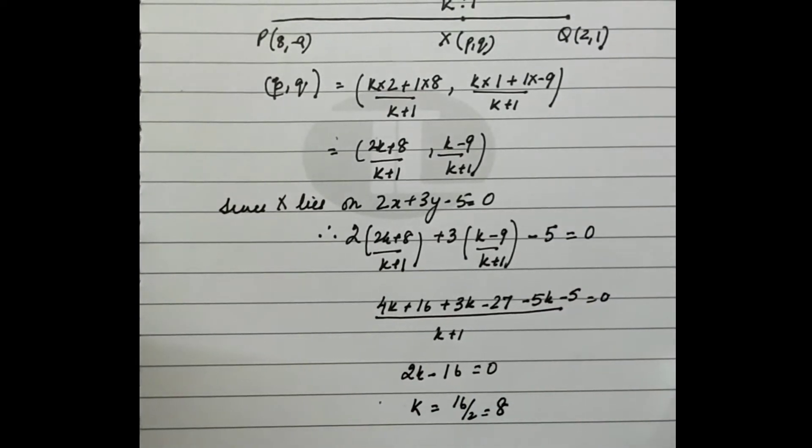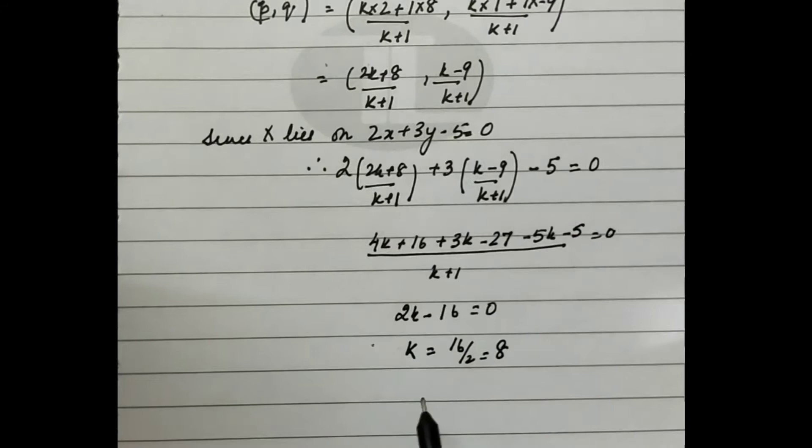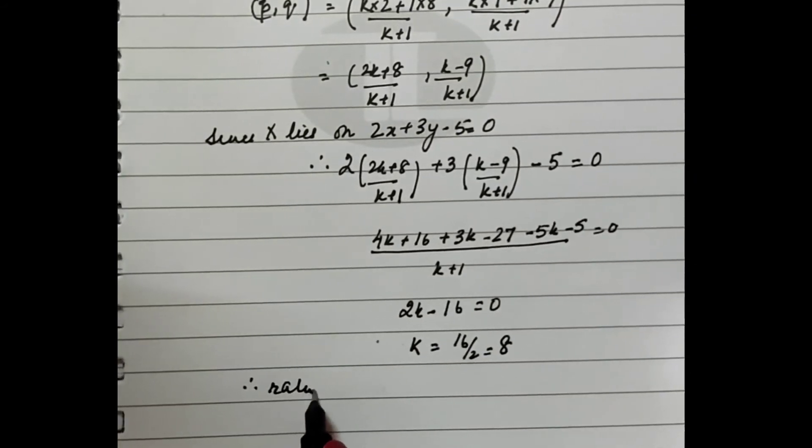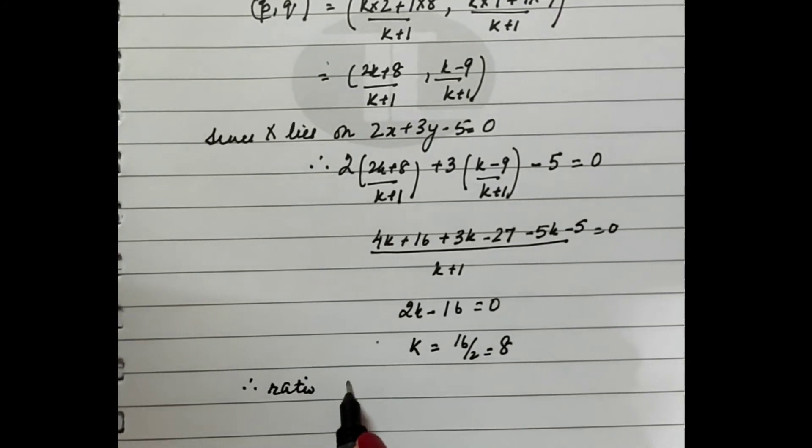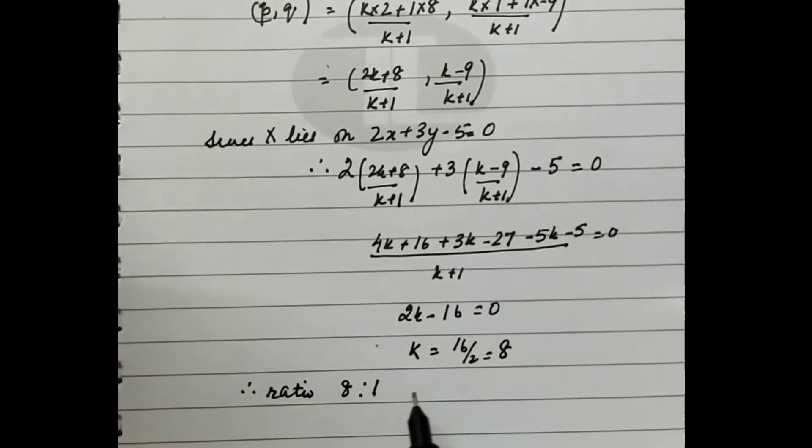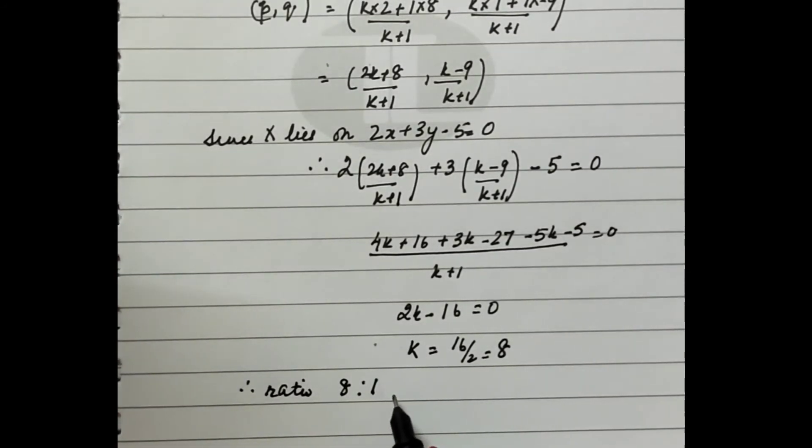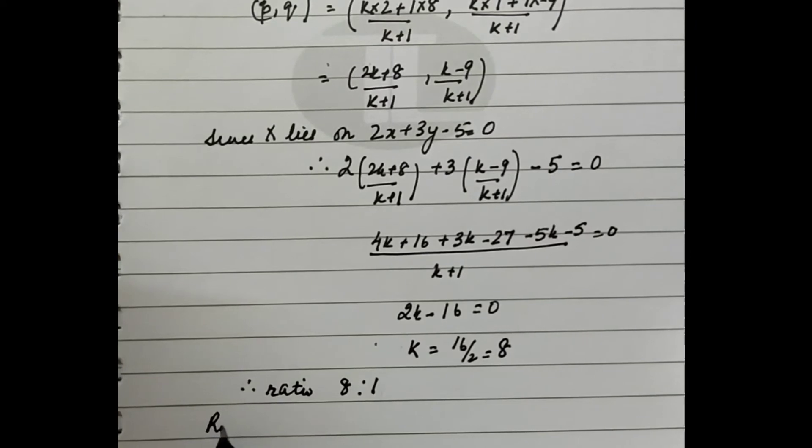Hence the ratio is 8:1, because it was k:1, so it becomes 8:1. Now for the required point,